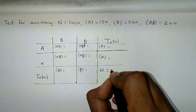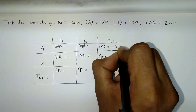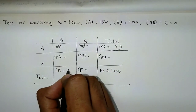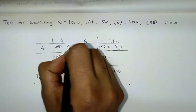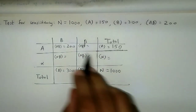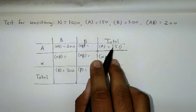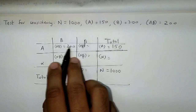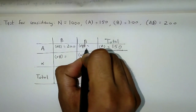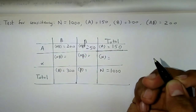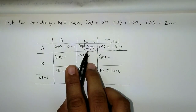n equals 1000, so here the total frequency is 1000. Frequency of A is 150, so here you have 150. Frequency of B is 300, and frequency of AB is 200. Now if you observe the very first row itself — AB is 200 and the total of A is 150. So if you subtract these two, 150 minus 200, you get a frequency of minus 50. So that is a major issue — you are getting a negative class frequency.